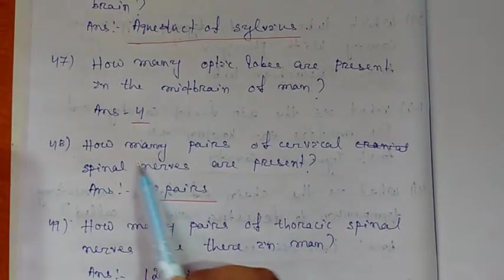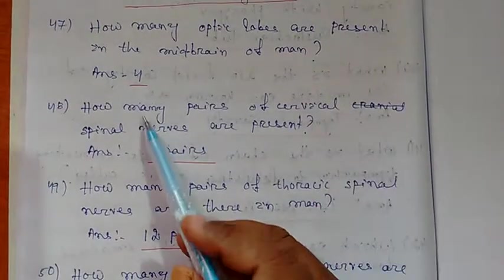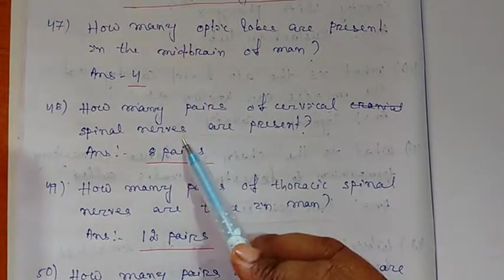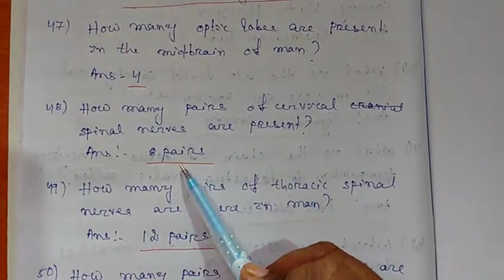Question number 48: How many pairs of cervical spinal nerves are present? Answer: 8 pairs.